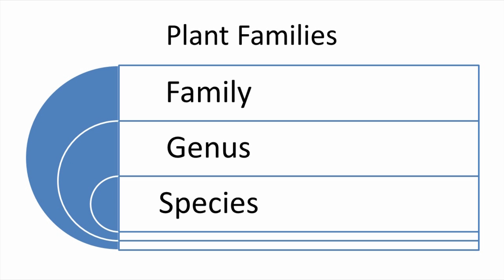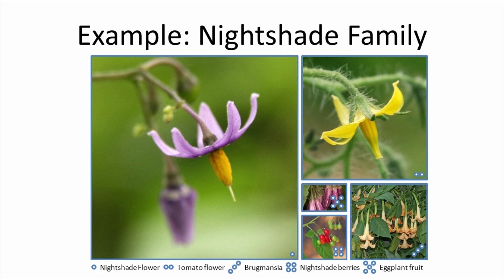In addition to physical or genetic similarities, plants within the same family often share the same susceptibility to insect and disease pests, or many members may produce the same toxic compounds. Becoming familiar with plant families is extremely helpful in the process of plant identification and diagnosing plant problems, but will take time and practice to develop. For example, the nightshade family, Solanaceae.